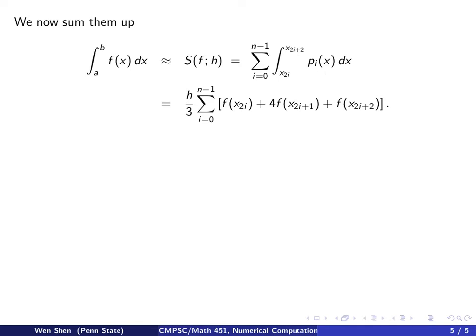And this we just worked out, so plug that in, this gives me this summation. So on each interval I have the left value and the right function value and plus 4 times the middle function value. And I take out h over 3 and put it outside because it's a constant.